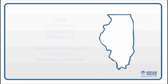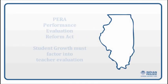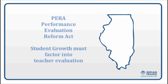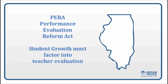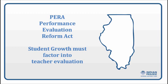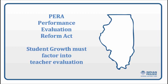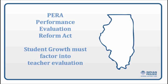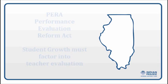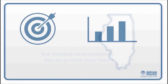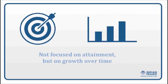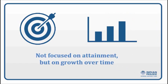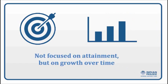In January 2010, the Illinois General Assembly passed, and Governor Pat Quinn signed, the Performance Evaluation Reform Act, or PARA. This law requires that student growth play a significant factor in teacher evaluation. It's important to note that this law does not look at attainment or a one-time achievement or score — it looks at growth over time between two scores.